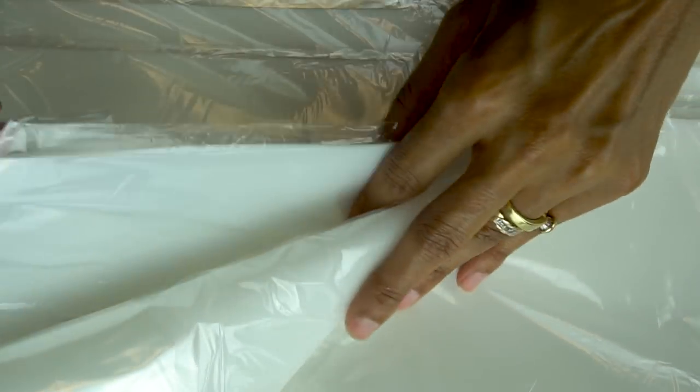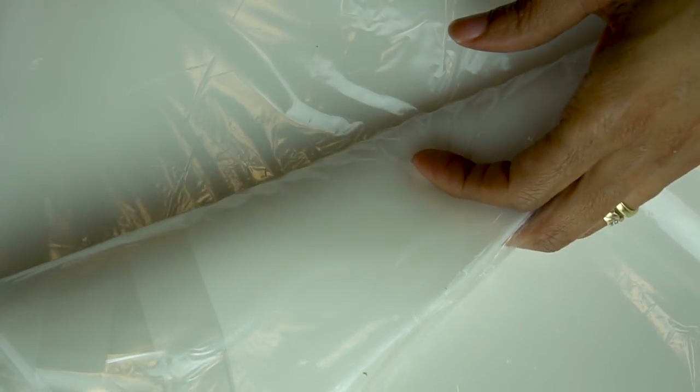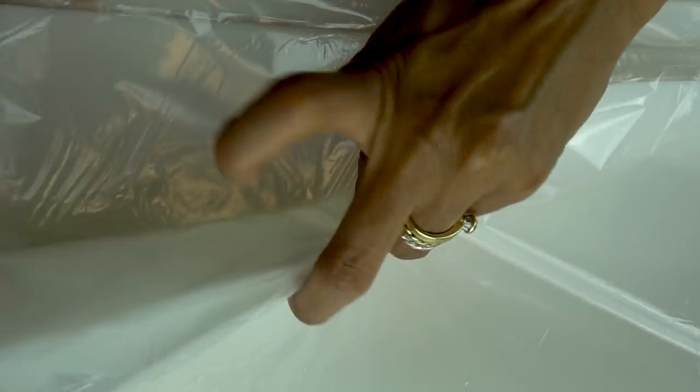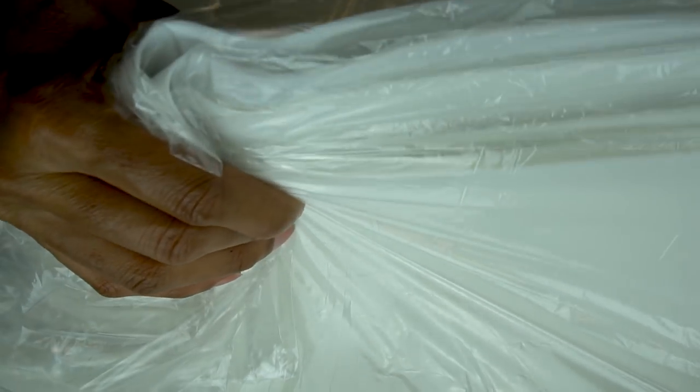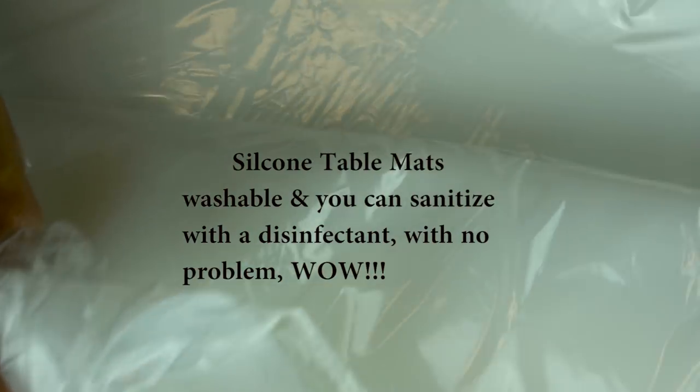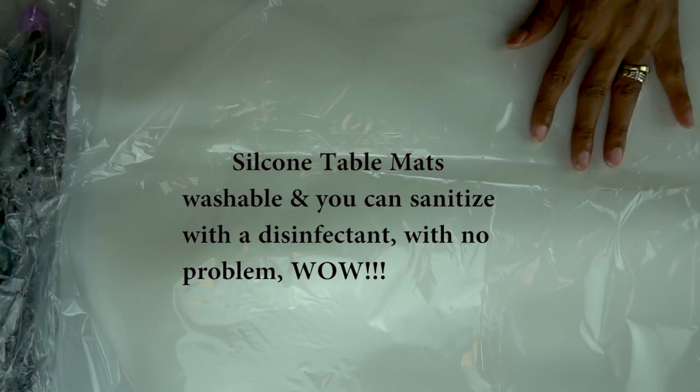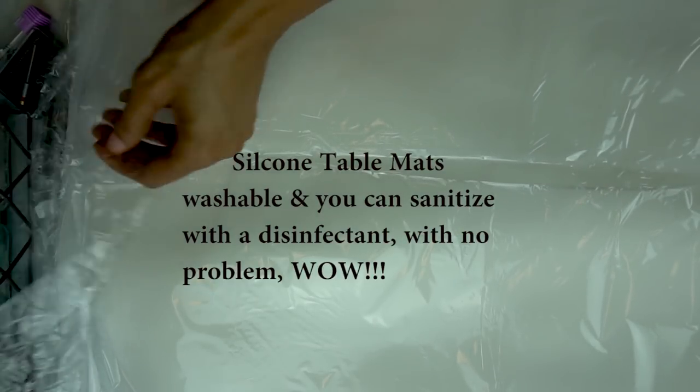Okay guys, this is what I bought: one, two, three, four, five, six, seven. I bought six. And what are these? These are silicone that you can put on your table and wipe clean.